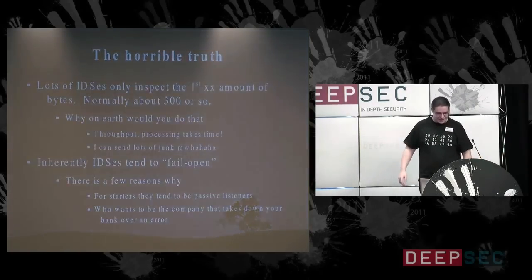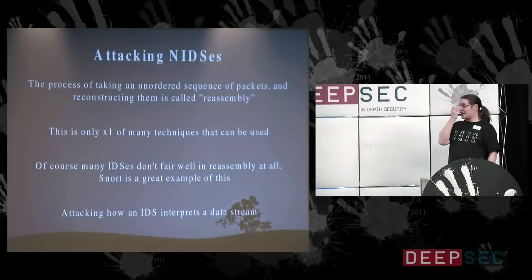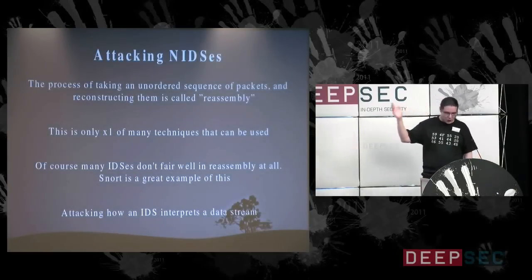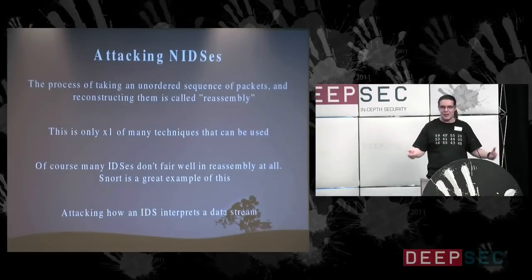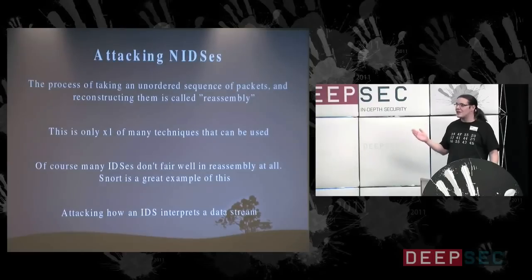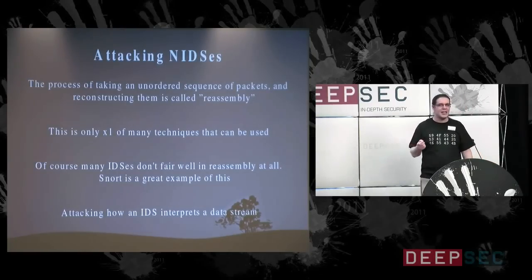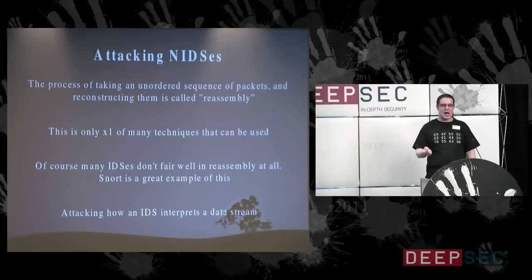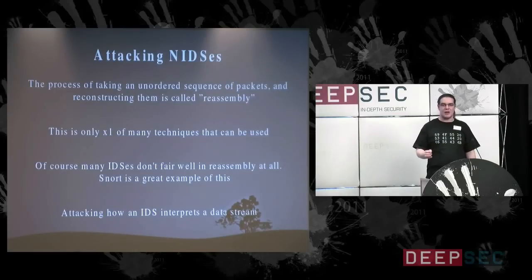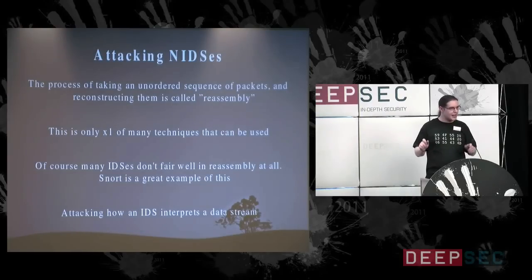No one wants to be the vendor that takes a network down. So: attacking IDSs — the process of taking an unordered sequence of packets and reconstructing them is reassembly. This is only one technique that can be used; there are lots of different techniques. When we talk about reassembly, we're really talking about making our stream of data reasonably complex and making the IDS work for its living — and when they work for their living, things get a little bit hinky.